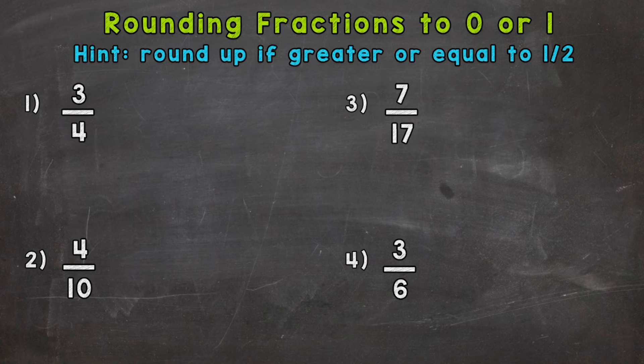All the fractions we're going to be working with are between 0 and 1, so they're not quite a whole. Again, rounding to either 0 or 1. When we round these fractions, essentially what we're doing is seeing are these fractions closer to 0 or are they closer to 1?